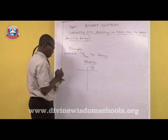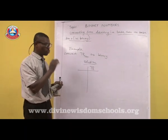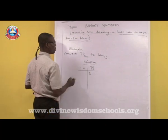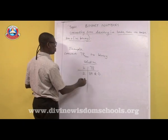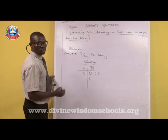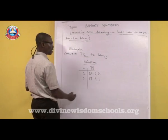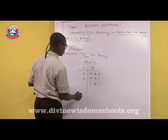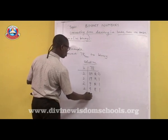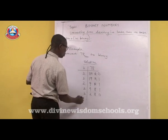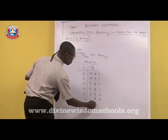So you have 78. Divide by 2: 78 ÷ 2 = 39, remainder 0. 39 ÷ 2 = 19, remainder 1. 19 ÷ 2 = 9, remainder 1. 9 ÷ 2 = 4, remainder 1. 4 ÷ 2 = 2, remainder 0. 2 ÷ 2 = 1, remainder 0. And 1 ÷ 2 = 0, remainder 1.